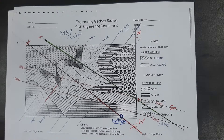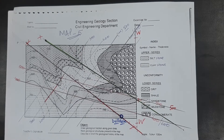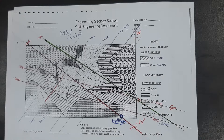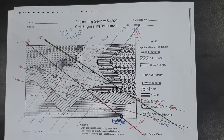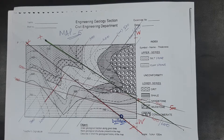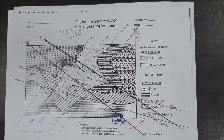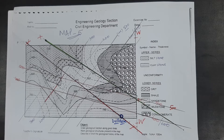Welcome to the engineering geology lab. This is a map you are familiar with — I have already submitted some videos on this map. Many of you have solved it, but some problems have been reported to me about the thickness of the rock, especially the sandstone, and about showing the rocks below the unconformity. So I have tried to solve this map for you. Strike lines are already drawn.